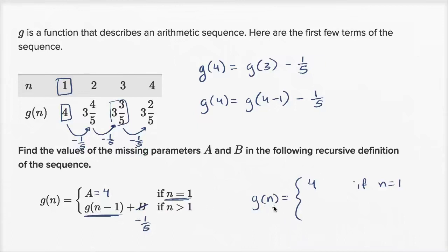So we could say g(n) equals g(n-1), the term right before that, minus 1/5 if n is greater than 1. For this problem, we see that a equals 4 and b equals negative 1/5.